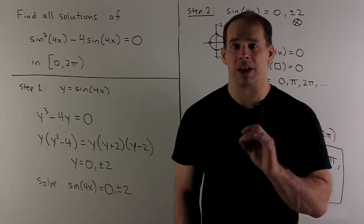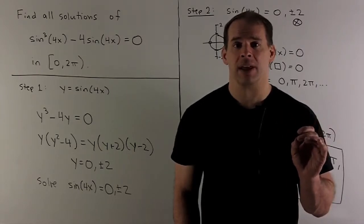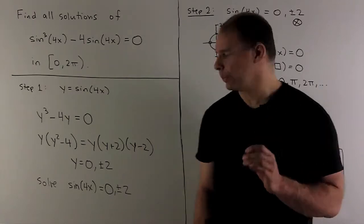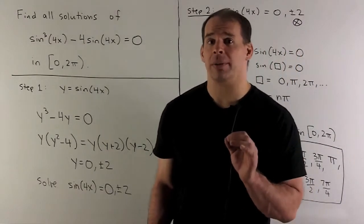With y = 0 or ±2, I'm now going to put sin(4x) back in. That gives me sin(4x) = 0 or ±2. This gets us to the next part, the trig.